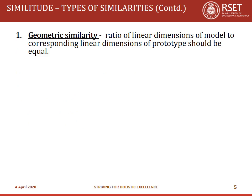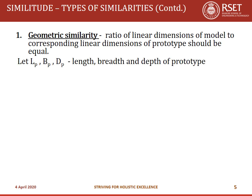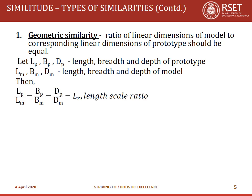Geometric similarity is the similarity between the linear dimensions. The ratio of linear dimensions of the model to corresponding dimensions of the prototype should be equal. If LP, BP, and DP are the length, breadth, and depth of the prototype, and LM, BM, and DM are those of the model, then LP/LM = BP/BM = DP/DM = LR, the length scale ratio. Using this, the area ratio becomes LR squared and the volume ratio becomes LR cubed.